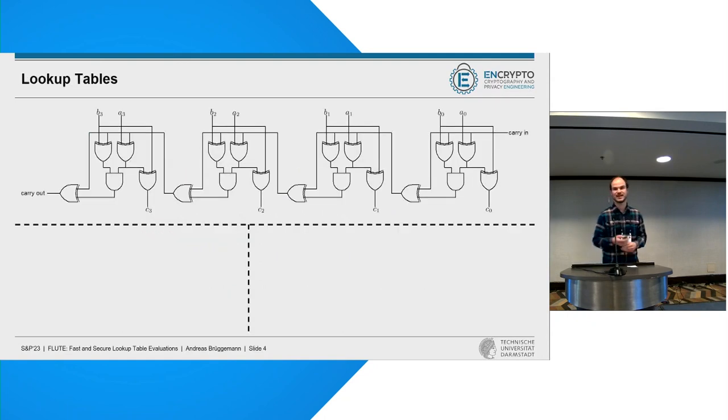So where do we exactly want to use lookup tables? If we look at one example, here we have a larger circuit only consisting of AND gates and XOR gates in this case. This is a simple four-bit addition, and we have here some problems that, for example, a signal has to travel quite some way from the right to the left side.